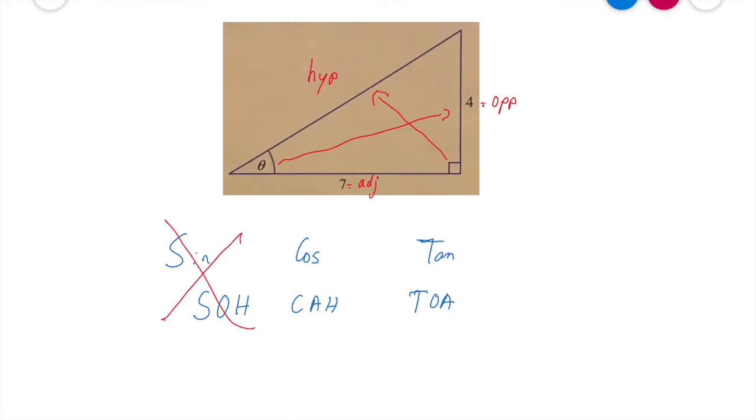For cos or cosine I need to have an adjacent, which I have, and the hypotenuse. I don't have the hypotenuse so I'm going to scratch that one out. However, let's see here, I have an opposite. I have an adjacent, so I'm going to be using tan. Excellent.